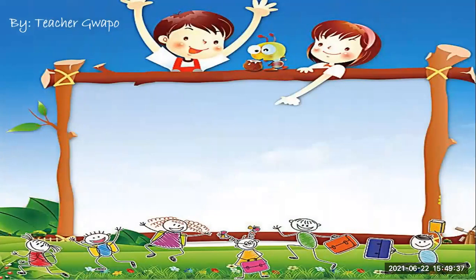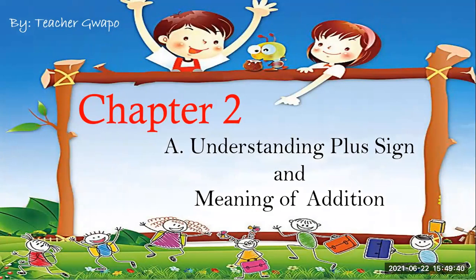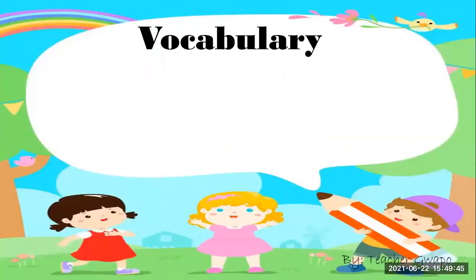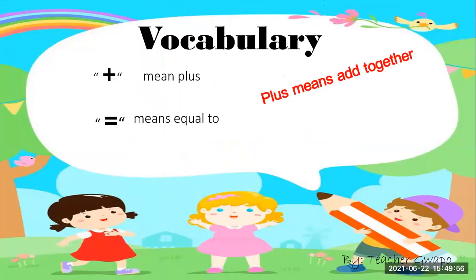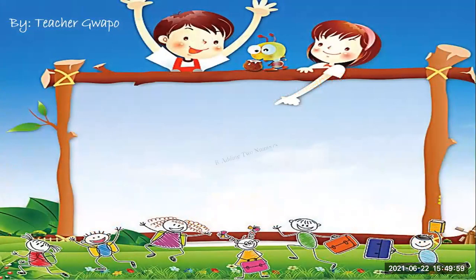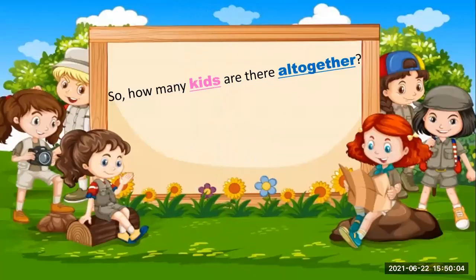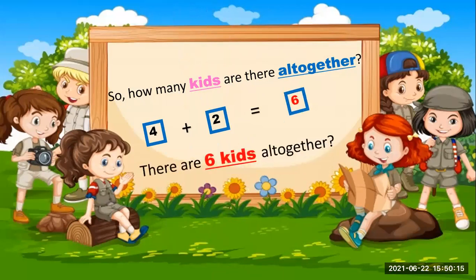In our previous video, we learned about understanding the plus sign and the meaning of addition. We also learned about the vocabulary — the plus sign means to add together, and the equal sign means equal to. We also learned about adding two numbers. For example, four girls plus two boys is equal to six, so there are six kids altogether.